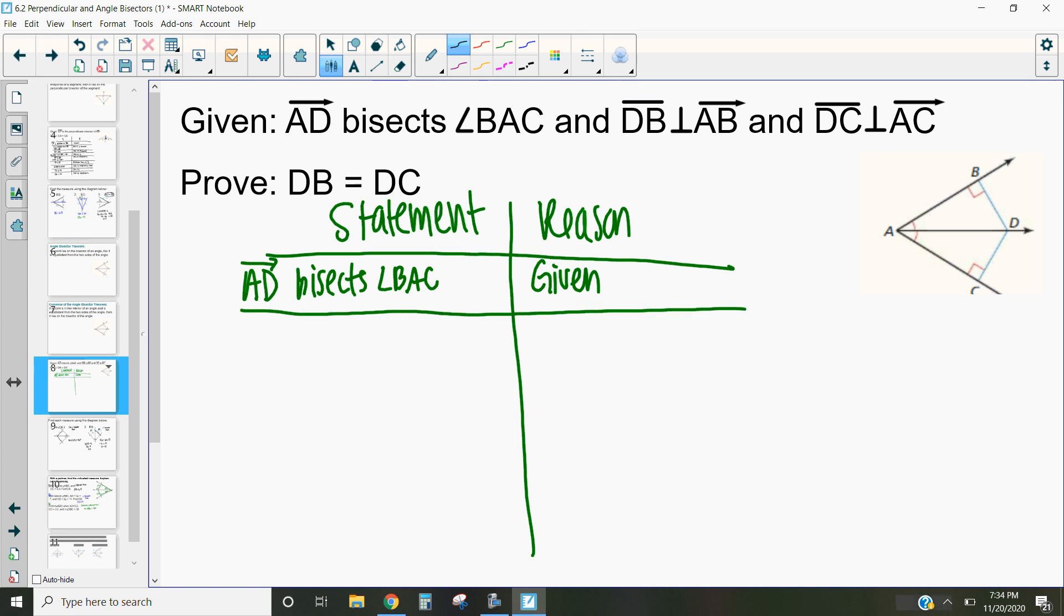Well by the definition of an angle bisector what that means is that angle BAD, oh that says BAC, angle BAD is congruent to angle CAD. Now that's what that means.